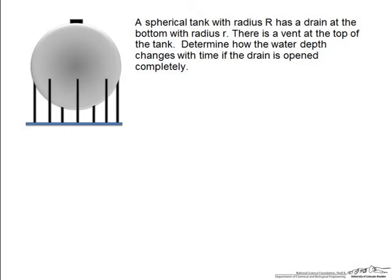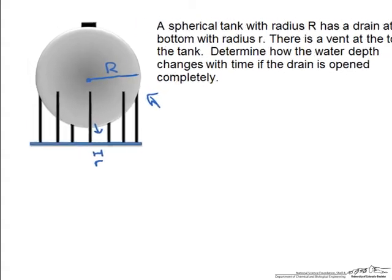In this screencast we are going to examine the draining of a spherical tank with time. This implies that there is an unsteady state balance. We will make certain assumptions to be able to use the Bernoulli equation to model the draining of this tank. We have a spherical tank with a radius we will call large R, and a drain at the bottom with a radius of small r.